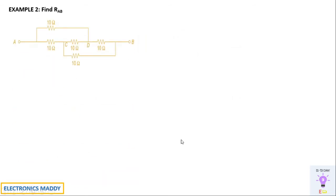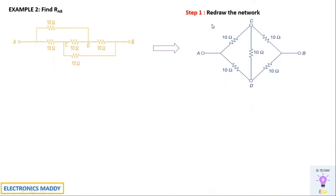The second problem looks quite different and requires a different approach. We need to find the effective resistance across terminals A to B. The key step is to redraw the figure — when rearranged, it looks like a bridge circuit. Since all resistances are equal, this resembles a balanced bridge configuration.